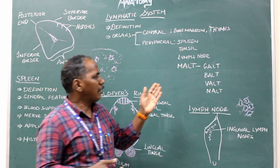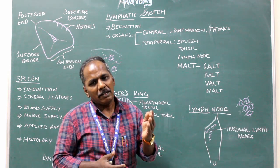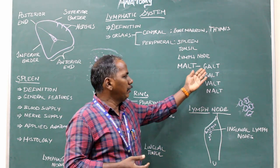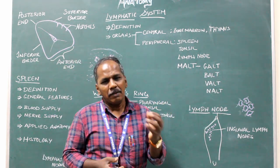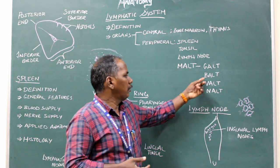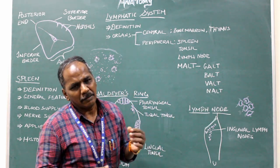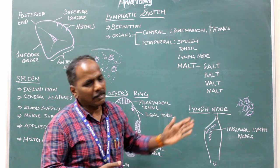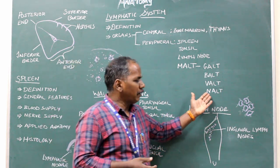MALT stands for mucosa-associated lymphatic tissue, which is a group of lymphatic tissue present in the submucosa of organs. It may be divided into gut-associated lymphatic tissue (GALT), which includes Peyer's patches and lymphatic follicles; trachea or bronco-associated lymphatic tissue (TALT), present in the respiratory system; vulvo-vaginal associated lymphatic tissue, present in the female reproductive system; and nose-associated lymphatic tissue (NALT), present in the nose and nasal cavity.